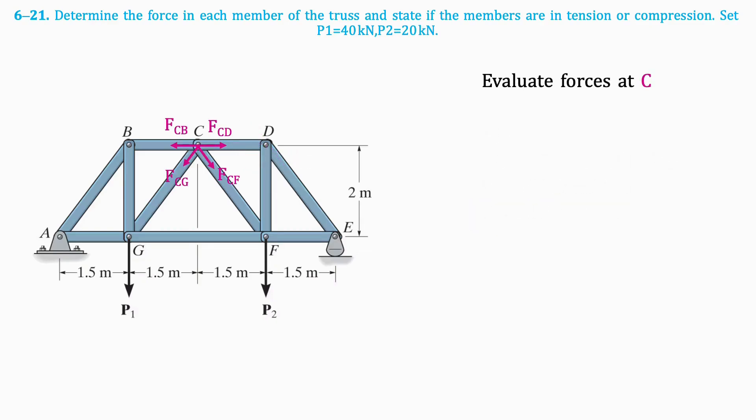The same process is applied at joint C, making sure to flip forces FCB and FCD, since they are in compression. Taking the sum of vertical forces shows that forces FCG and FCF are equal but opposite.